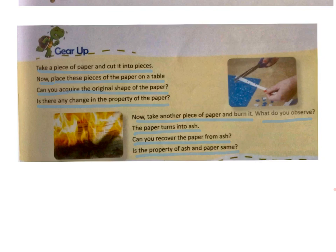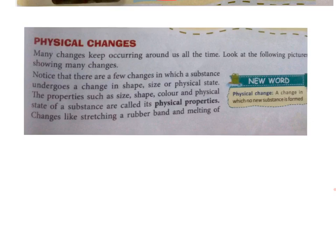We can acquire the original shape of the paper by pasting the pieces together. There is no change in properties of the paper. In the second case, you can't recover the paper from ash, and the property of ash and paper are entirely different. Now let's classify them into physical change or chemical change.